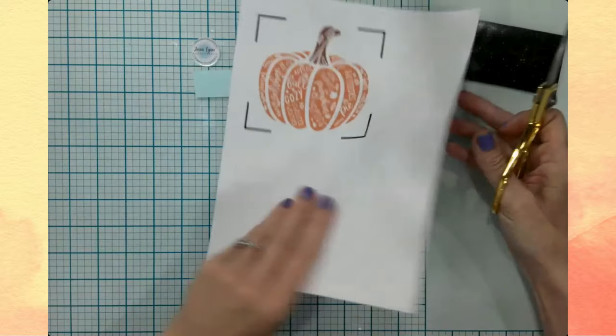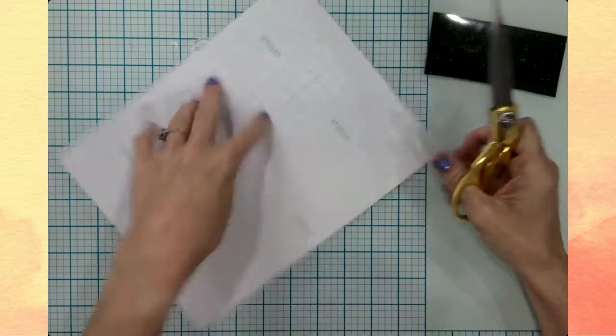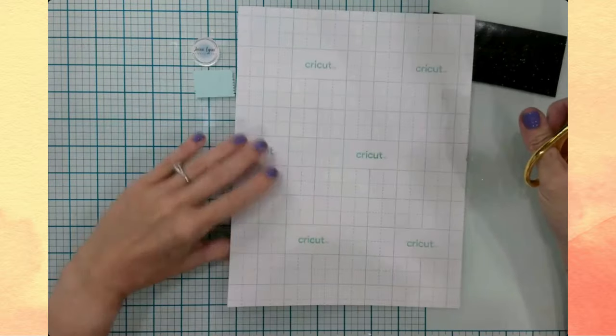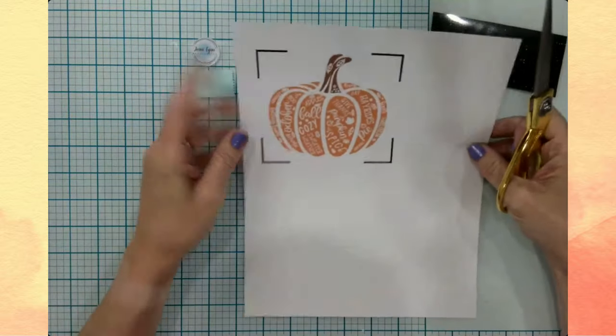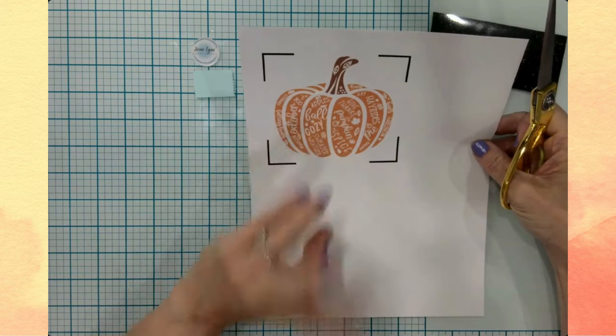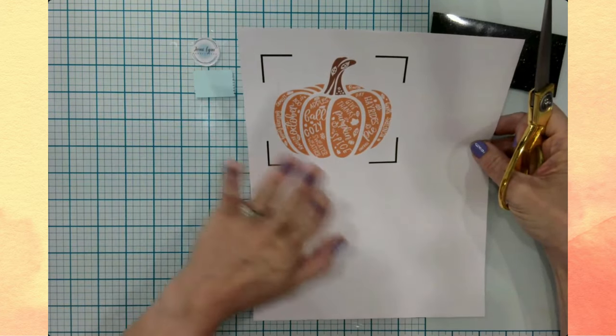And then this design was printed on my inkjet printer. It is the Cricut brand printable vinyl, iron-on vinyl. And it is for light colors. They have two kinds. They have one for dark colors, one for light colors.